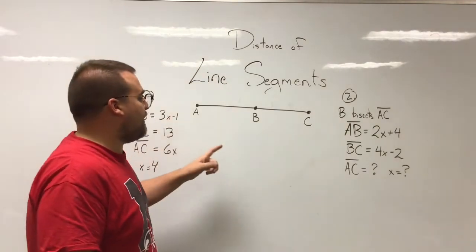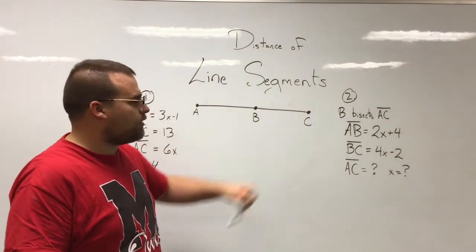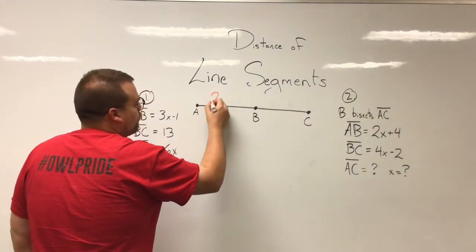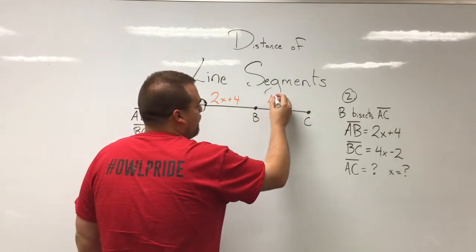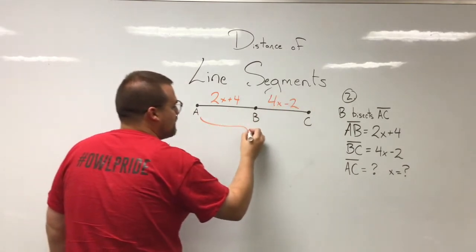I'm going to go ahead and label my information though. AB is 2x plus 4, and BC is 4x minus 2. Now we don't know anything about AC as a whole.